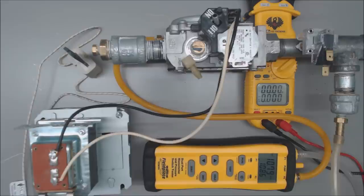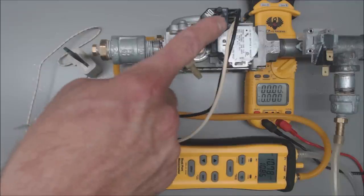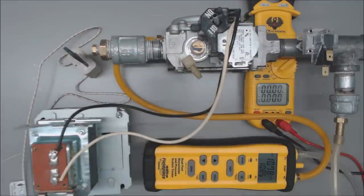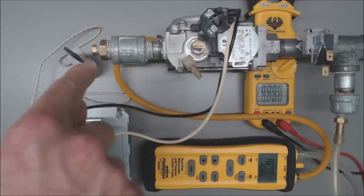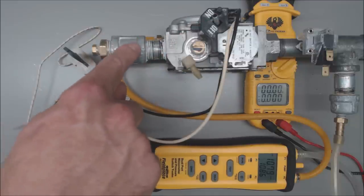So then what you're going to want to do is wait for the sequence of operation to have the hot surface igniter turning cherry red and you want to read voltage over on those two terminals. At the same time, if you do have 24 volts here, you want to make sure that you're checking your outlet gas pressure.